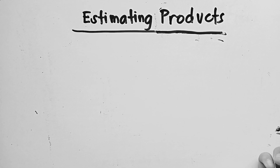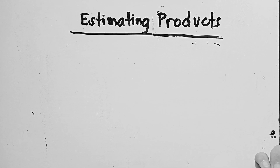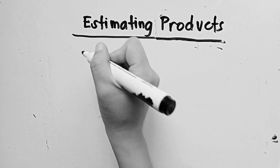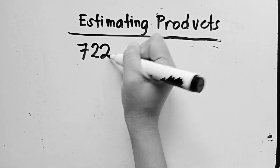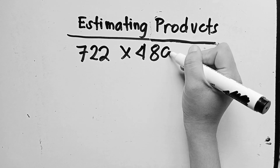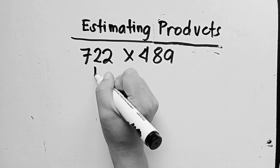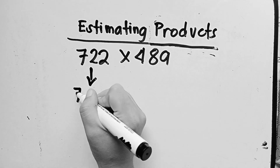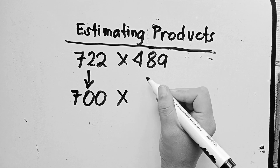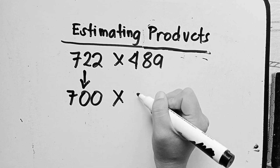For our next topic, estimating products. We will again use rounded numbers to estimate products. For example number 3, we'll estimate the product of 722 multiplied by 489. By rounding to the nearest hundred, 722 becomes 700, and the nearest hundred of 489 is 500.